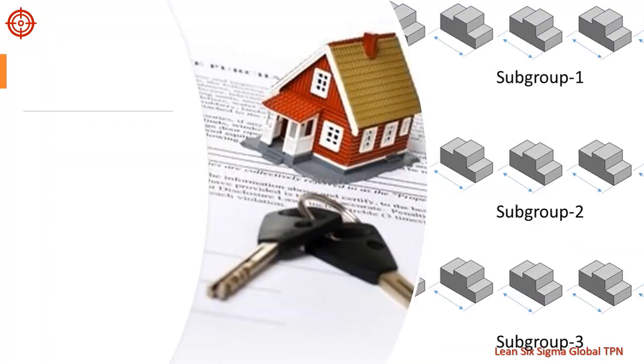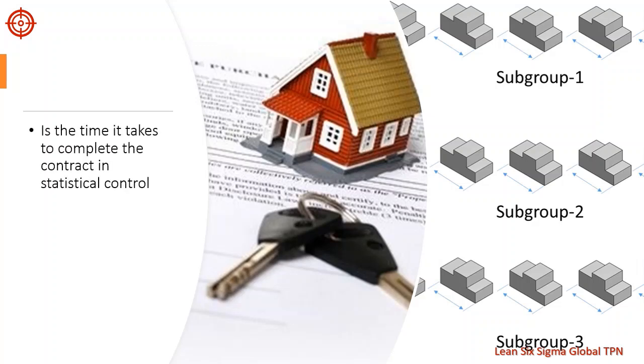So far we talked about monitoring processes where we collect variables data in rational subgroups. But in many processes, it makes more sense to collect individual observations rather than subgroups. For example, consider a real estate corporation. When customers decide to purchase a home, they fill out a real estate contract with their agent. This process takes time and the real estate company wants to know if the time it takes to complete their contract is in statistical control.